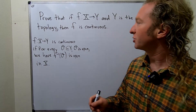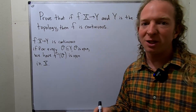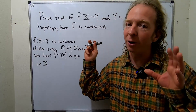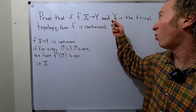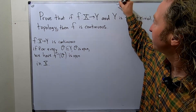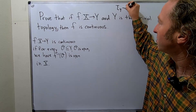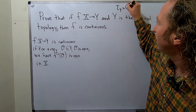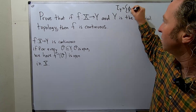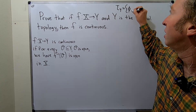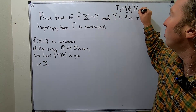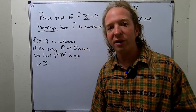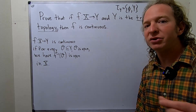The trivial topology is also called the indiscrete topology. It's a special topology where the only open sets are Y and the empty set. So if tau sub Y is the topology we're defining on Y, it would be the collection containing namely the empty set and Y — these are the only open subsets in the trivial topology.